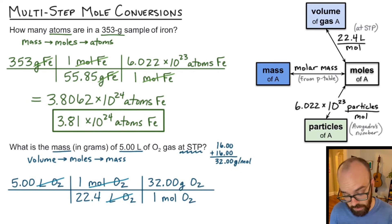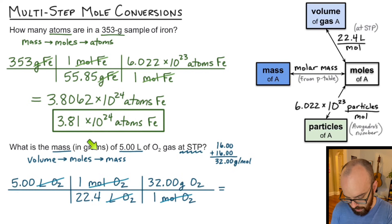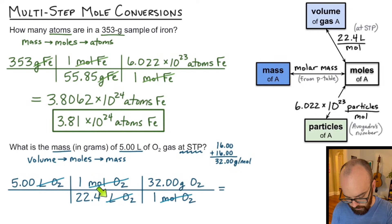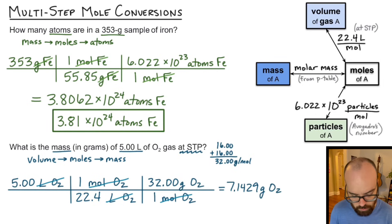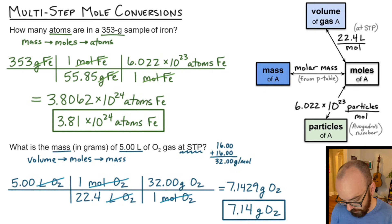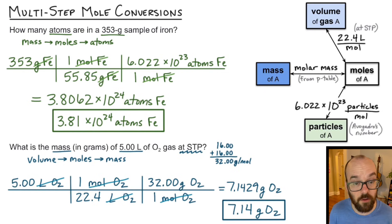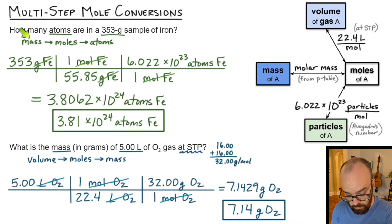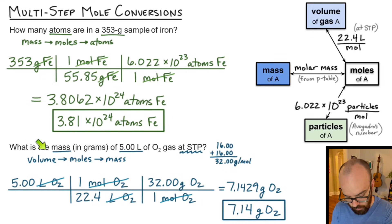Moles of oxygen divide out, leaving grams of oxygen — the mass I'm trying to find. I take 5 times 32 and divide by 22.4, getting 7.1429 grams of oxygen. Three sig figs were given in the problem, so the answer is 7.14 grams of oxygen. In this video we did two conversions: one between mass and particles, and one between volume and mass.